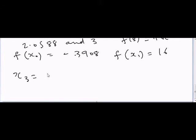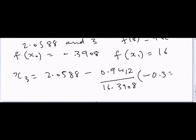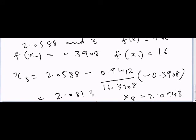x₃ is equal to 2.0588 minus (negative 0.9412 divided by 16.3908) multiplied by minus 0.3908. The answer will be equal to 2.0813. So we can keep doing this, and if you ask the computer, you can keep solving it so that you can reach the answer. And if I use the computer, I can go for many approximations and ultimately I can get x₈ is equal to 2.0943 and then keep doing this.